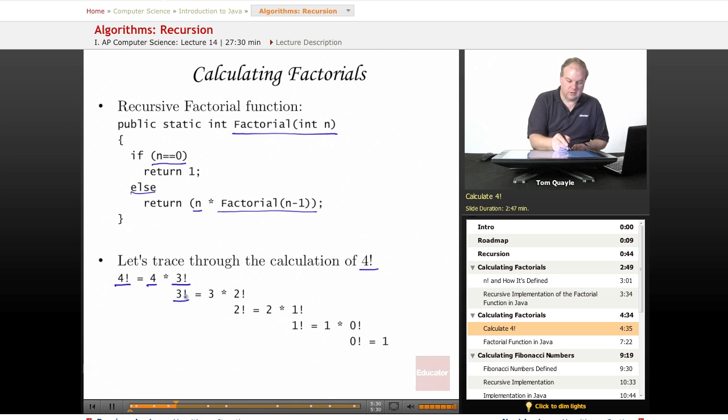So three factorial, we come in here, n is not zero, so we do the else part. We return n, which is three, times factorial n minus one. That's where we get our three times two factorial. We're not done yet because we don't know the value of two factorial. So we call factorial, from this recursive call factorial of two, we get two factorial. n is still greater than zero, so we do the else part again. We return two times factorial of two minus one. So that's two times one factorial.